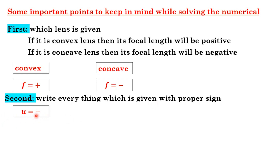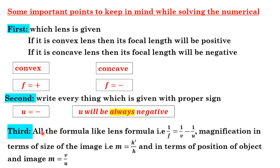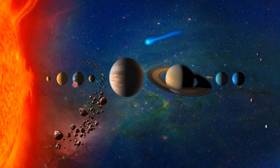Keep all formulas in mind: the lens formula 1/f = 1/v − 1/u, magnification in terms of height m = h′/h, and magnification in terms of position m = v/u. If these things are clear, you can easily solve any numerical based on lens formula and magnification. That's it for today's class. Thank you, stay at home, stay safe, and stay healthy.